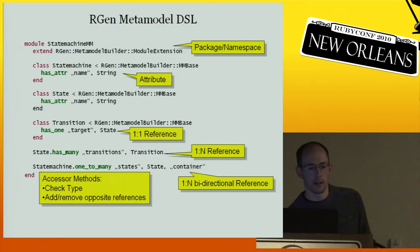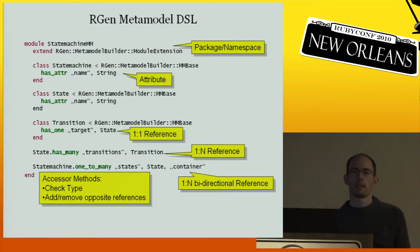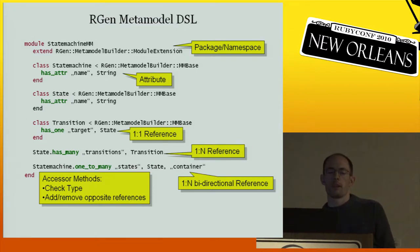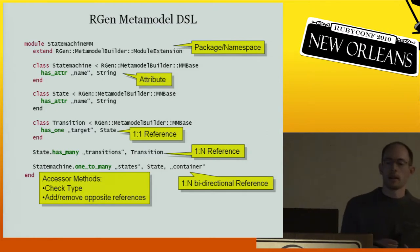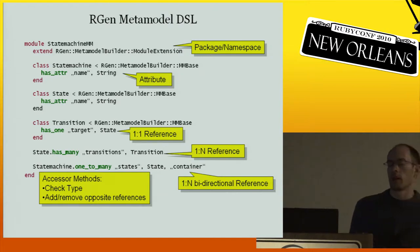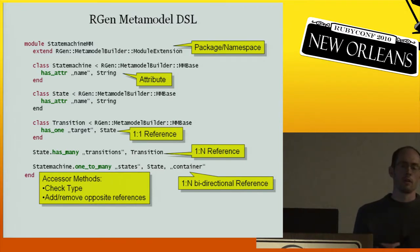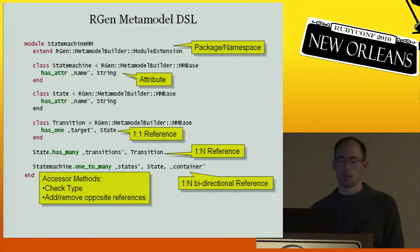What these metamodel commands do is create the accessor methods — and not just simple accessor methods like attribute_accessor in Ruby, but they do type checking, because we have specified the types. This is important because otherwise the model would not be consistent. They also handle the opposite reference thing: if there's an opposite reference and you hook one element into another, it builds up the reverse reference automatically — and that's very handy.